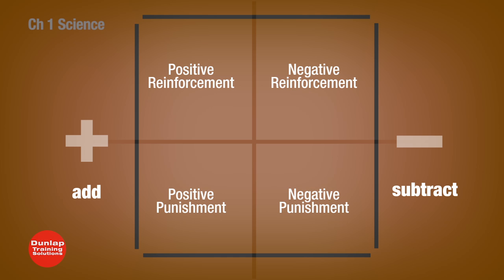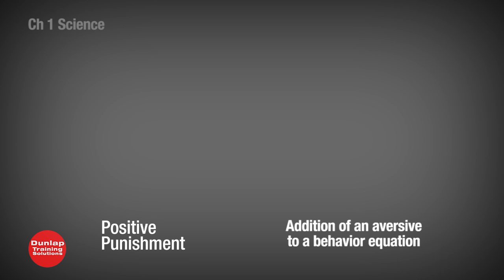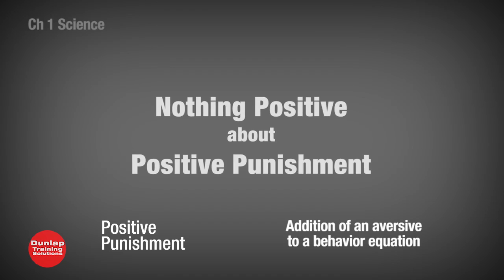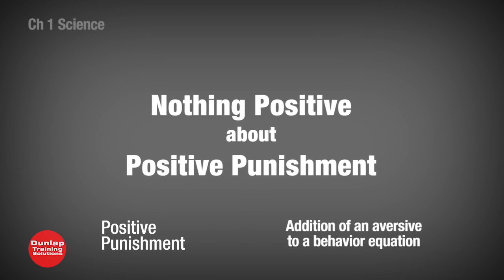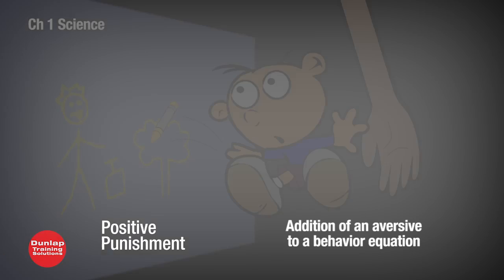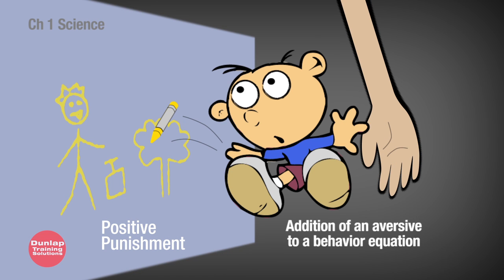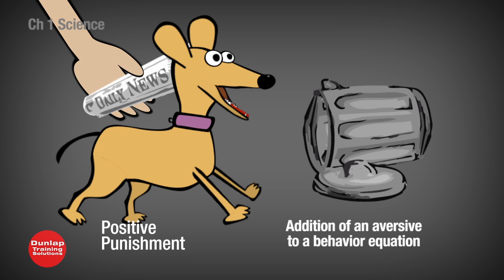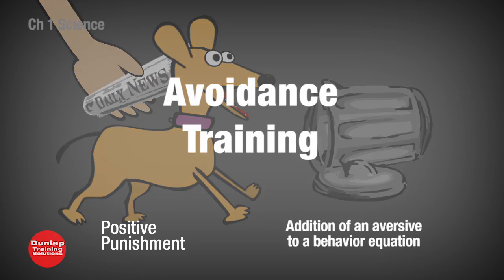Positive punishment is the addition of an aversive to the behavior equation. Remember, there is nothing positive about positive punishment. A kid gets a spanking for a bad behavior. A dog gets into the trash and gets a rolled-up newspaper to the side of the head. This type of training is often called avoidance training.